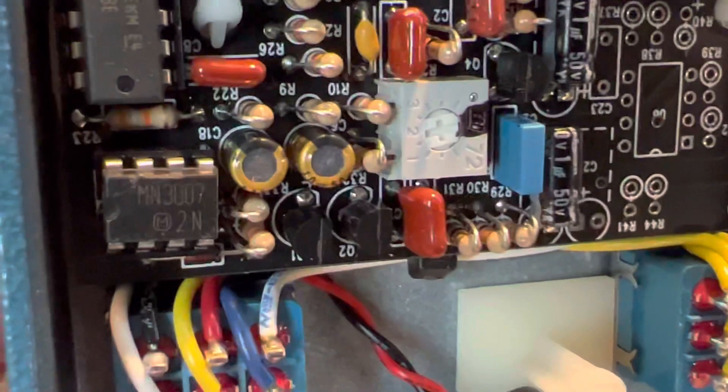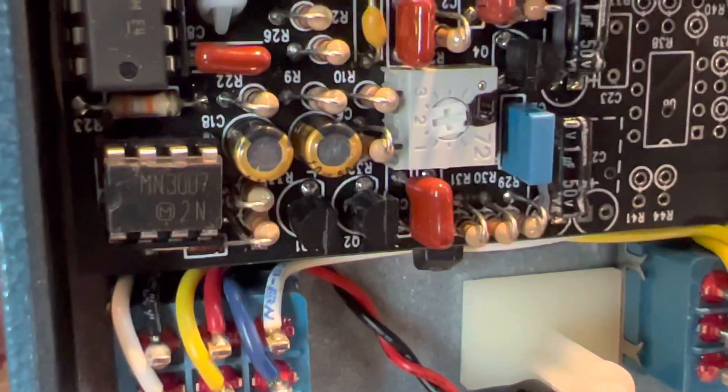Here's the delay chip in our Corus, the Panasonic MN3007 chip.